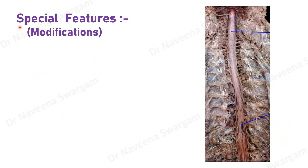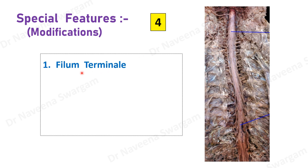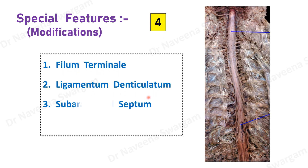Spinal pia mater shows four special features or modifications. They are: filum terminale, ligamentum denticulatum, subarachnoid septum, and linea splendens. They all help in maintaining the position of the spinal cord within the vertebral canal by anchoring it onto the dura mater. Let's learn about these modifications in detail.